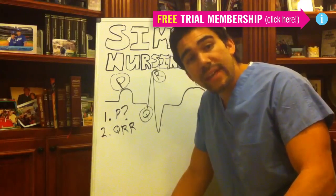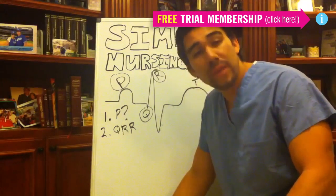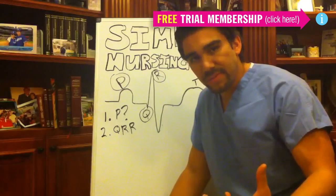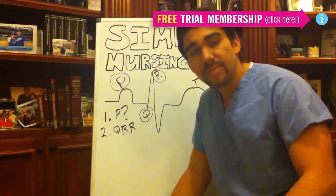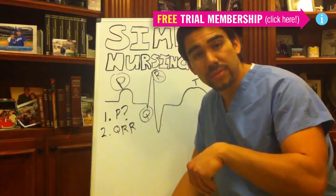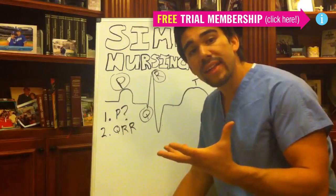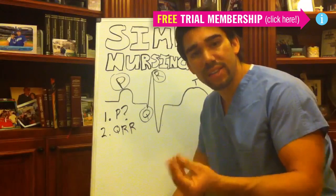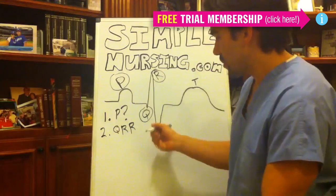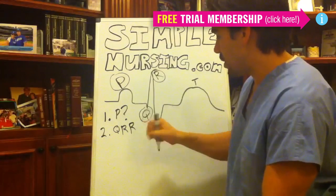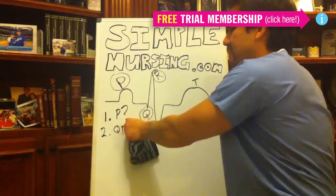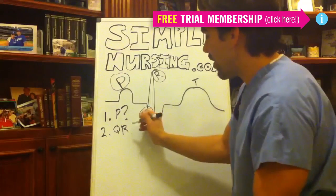Usually nine times out of ten, if the P waves are depolarizing, where's that blood going? To the ventricles, right? Atriums depolarizing, sending that blood down into the ventricles — the ventricles swell. What happens after they swell? They contract. So you'll probably see a QRS wave. Note: it's QRS, not QRR.